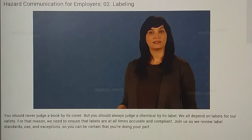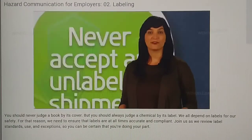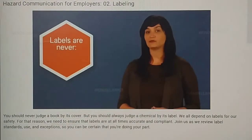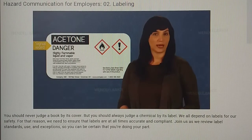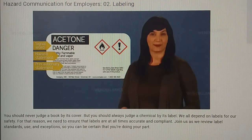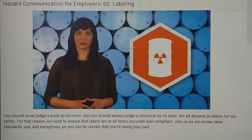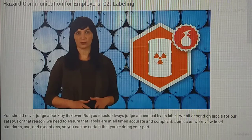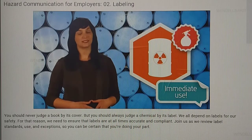Now that you know the required label elements, let's talk about how labels should be used. Any containers of chemicals shipped to you must be labeled — never accept an unlabeled shipment, no matter how long you've been working with the manufacturer. As an employer, it's your responsibility to ensure that once you receive the shipment, labels are never removed, damaged, or covered up. These labels are there to give immediate, easy-to-decipher warnings with a snapshot of both the hazards and protective information relating to that chemical. If you have workplace containers used to store or transport chemicals around your facility, they need to be labeled as well. The only exception is if an employee transfers a hazardous chemical into a portable container for immediate use — as long as it's used immediately by the employee who transferred it, the portable container does not need to be labeled.